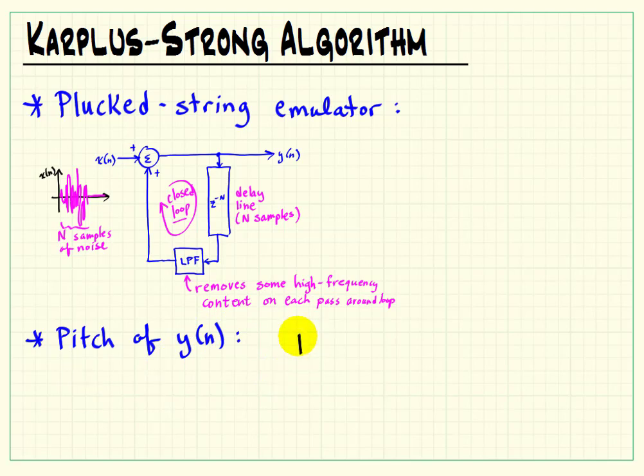To explore this in more quantitative detail, the pitch of the output signal Y ultimately is determined by the period of the signal, and that's called the loop time defined as tau.